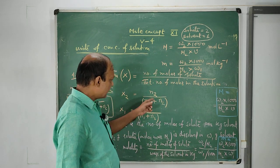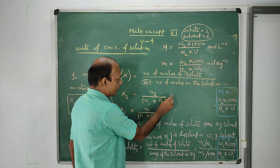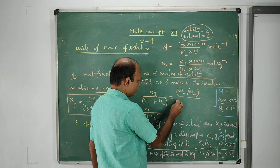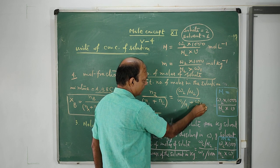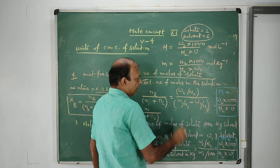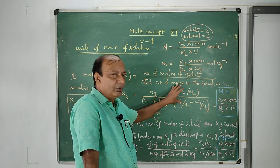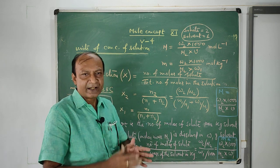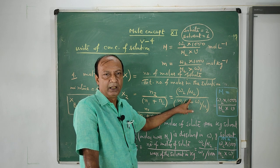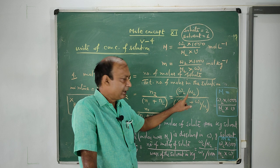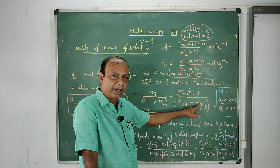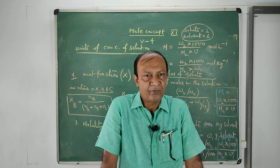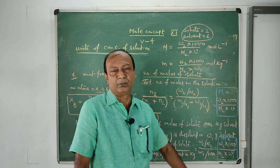To further extend this formula: N2 equals to W2 by M2, N1 equals to W1 by M1. So the extended formula for mole fraction of solute X2 equals to (W2/M2) divided by (W1/M1 plus W2/M2). This formula is more useful because in most cases weights are given. For example, if 10 gram of sodium chloride is dissolved in 40 gram of water, you use this extended formula with the respective molar masses.